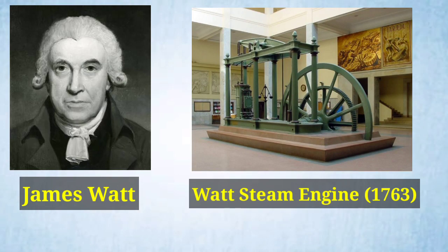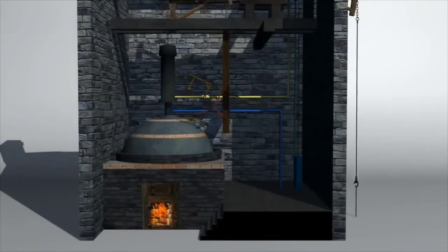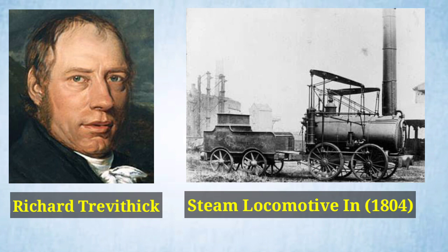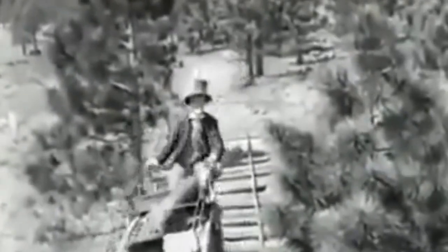Number 2: Watt Steam Engine — Scottish Engineer James Watt ने 1763 में पहले Practical Steam Engine का आविष्कार किया था। Number 3: The Locomotive — 21 February 1804 को पहली recorded Steam Railway यात्रा हुई, जिसमें 10 टन लोहा और कुछ यात्रियों को लेकर 9.75 miles की यात्रा कराई गई। इस यात्रा की औसत गति थी 2.4 miles प्रति घंटे।